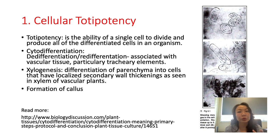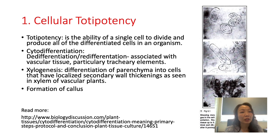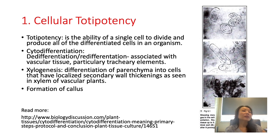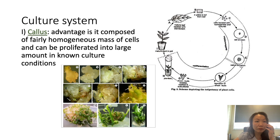or grow into shoot, roots, and so on. Cytodifferentiation is the differentiation or re-differentiation associated with vascular tissue, particularly tracheary elements, and xylogenesis is the differentiation of parenchyma into cells that have localized secondary wall thickening as seen in xylem or vascular plants. All these types of cell differentiation lead to the formation of callus and regeneration of the callus into a different plant type.